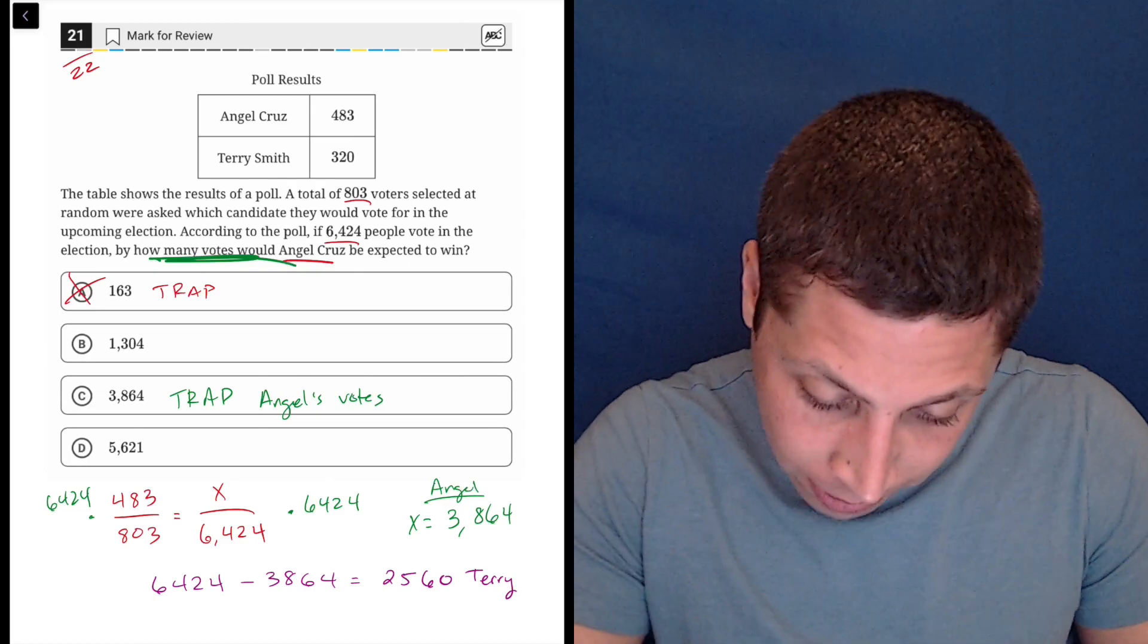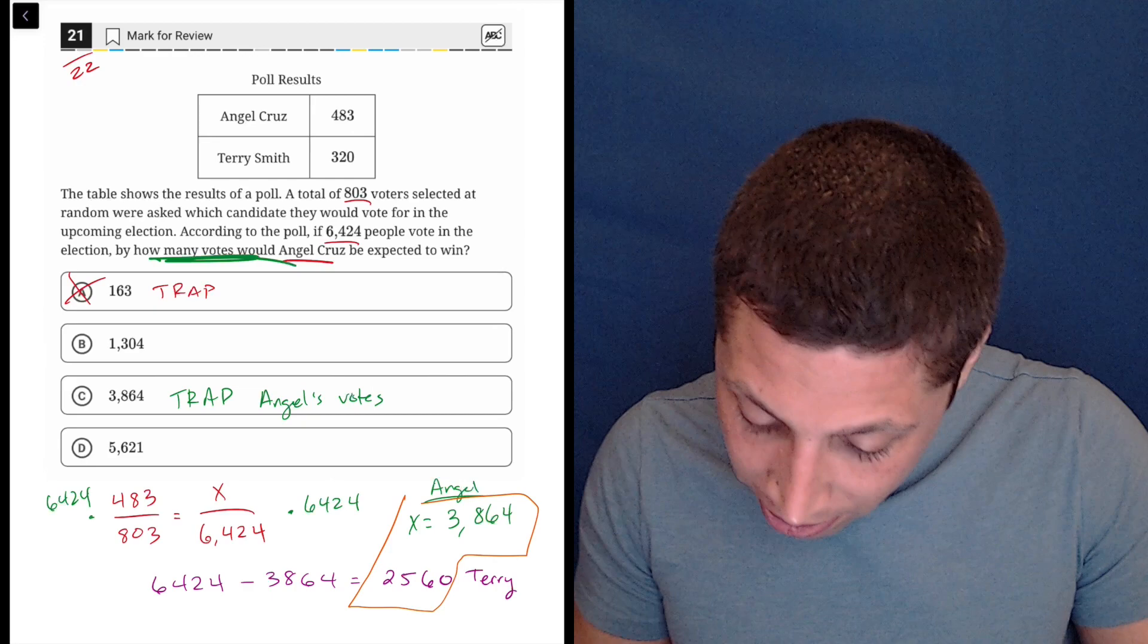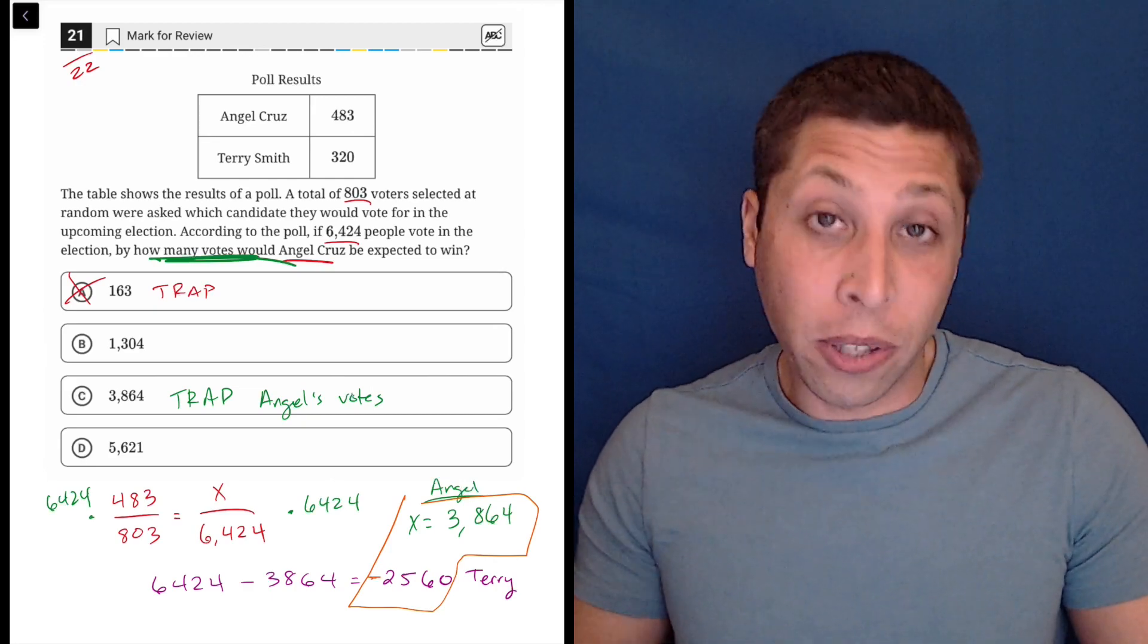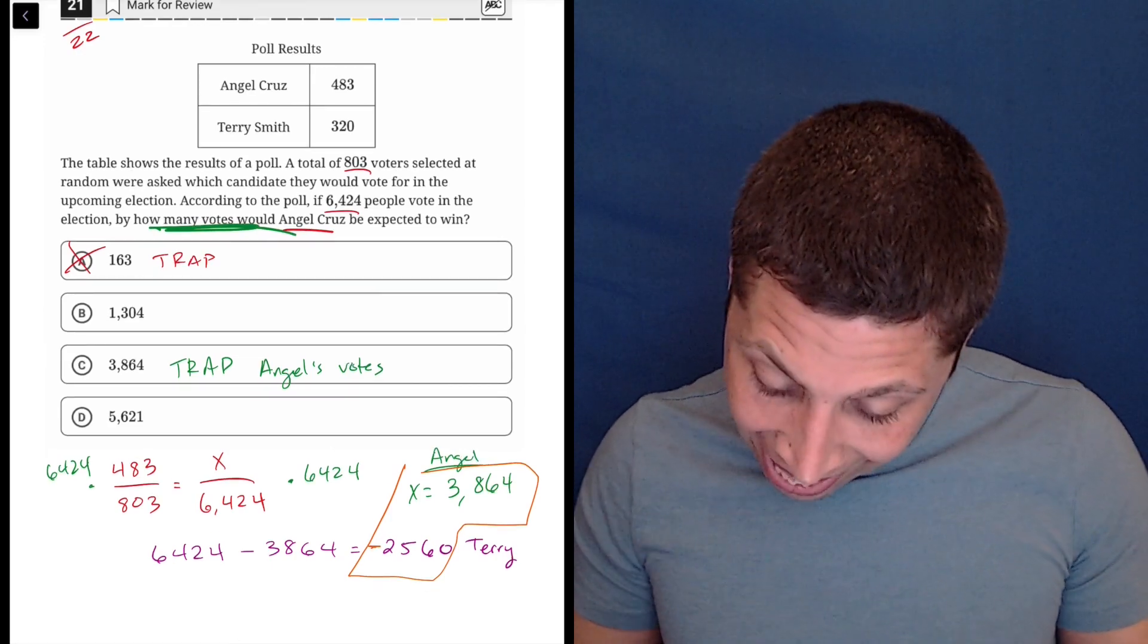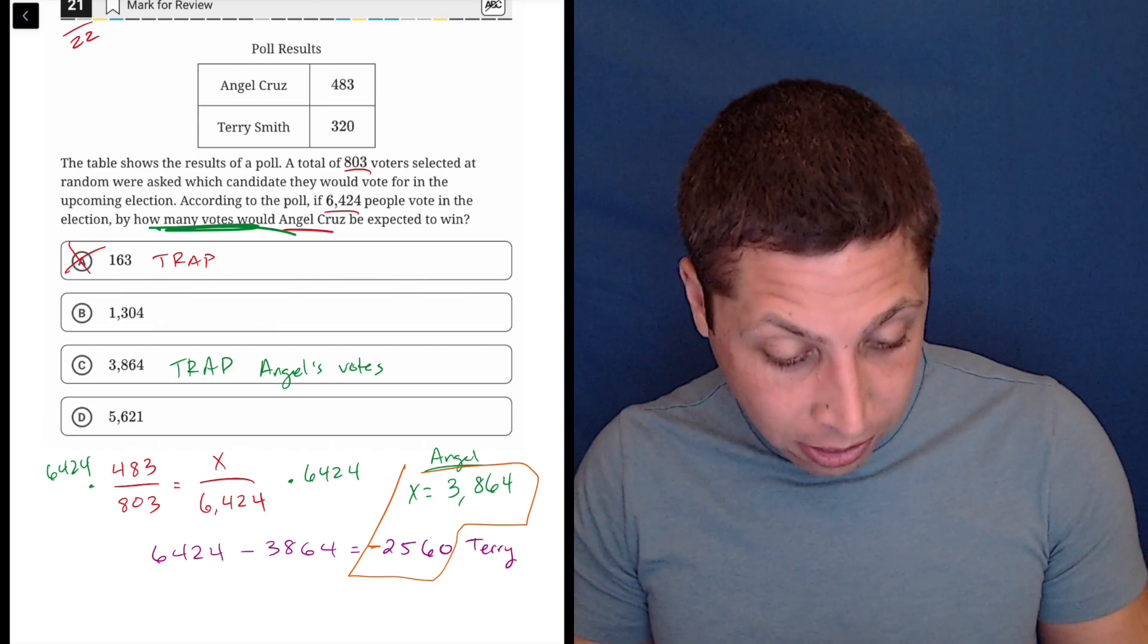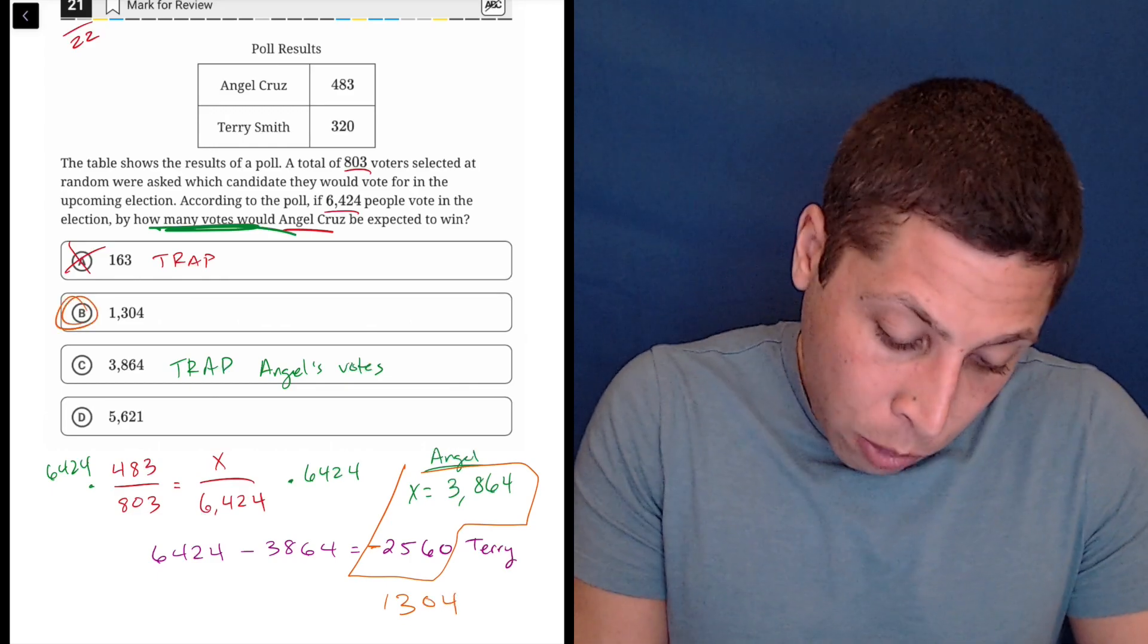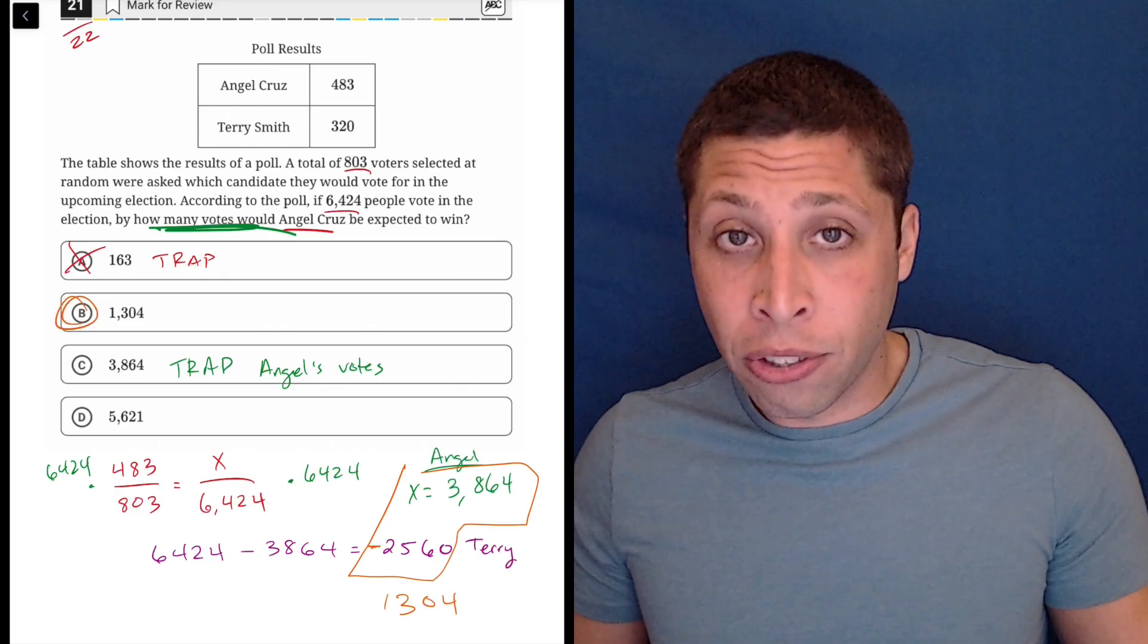And now I can do, getting kind of messy here, I can do some subtraction with these two numbers to see what the difference is. So 3,864 minus 2,560 is 1,304, which is choice B, which is the answer.